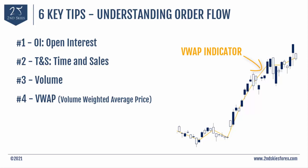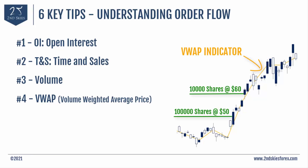So if one trader buys 10,000 shares on XYZ stock at $60, and yet another buyer comes in with 100,000 shares at $50, that should tell you that there's strong buying pressure at $50 — more buying pressure than there was at $60.